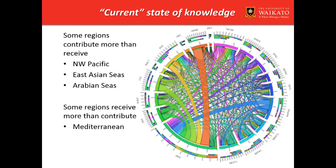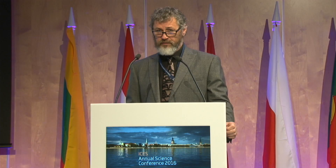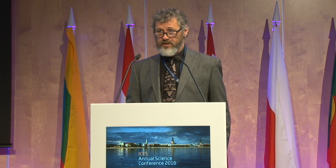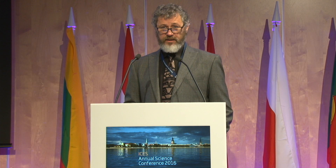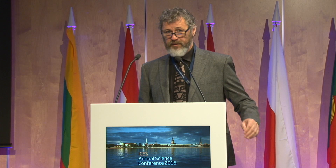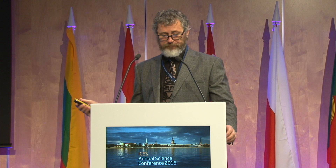The key behind this Circos plot is that you can start to see who contributes species to other regions and who is a receiver. You can see that the Mediterranean, by far and away, is the receiving region, not the donor region. Whereas other places like the Northwest Pacific — Japan, China, Korea — the East Asian Seas and the Arabian Seas are significant donors but not necessarily recipients. Some of those differentiations may be because we have a poor knowledge base about receiving, so they don't know how many species they have, but other locations can recognize species coming from those locations.